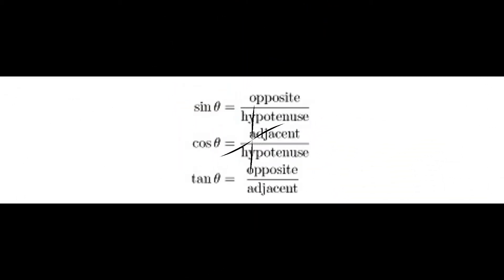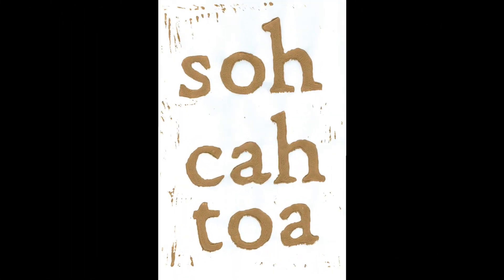In physics, we use SOH-CAH-TOA all the time. We use it with right triangles to find the x and y. We use SOH-CAH-TOA all the time. Sine is o over h, cosine is a over h, tangent is o over a, and theta is the angle that we use.